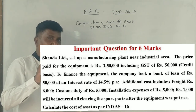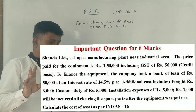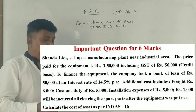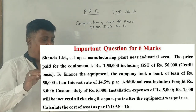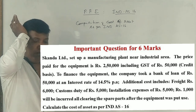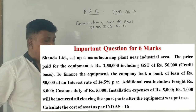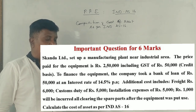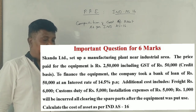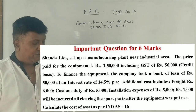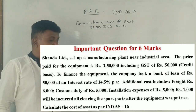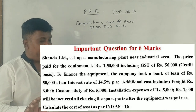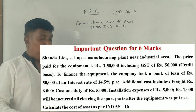The cost of the asset is Rs. 250,000 and GST will be Rs. 50,000. On a credit basis, to finance the equipment, the company took a bank loan of Rs. 50,000 at an interest rate of 14.5% per annum.